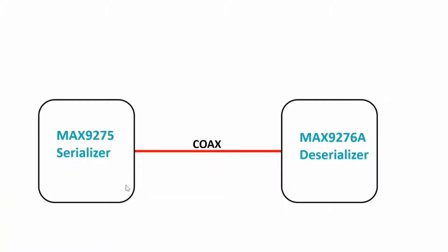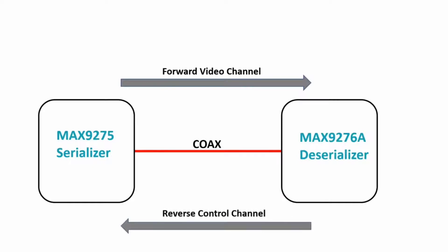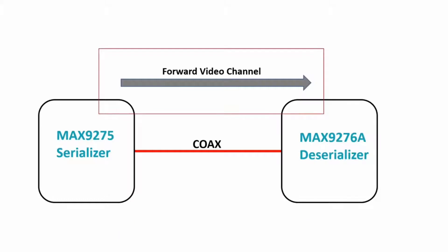Before we start, we should know what is inside this chipset. Have a look at the block diagram shown on your screen. A GMSL1 chipset consists of two channels: the first one is the forward video channel, which goes from Serializer to Deserializer, and the other one is the reverse control channel. Now we are specifically going to be focusing on the forward video channel.